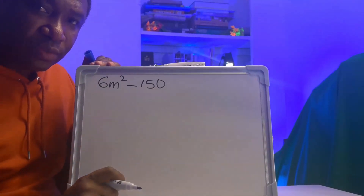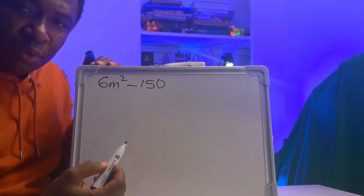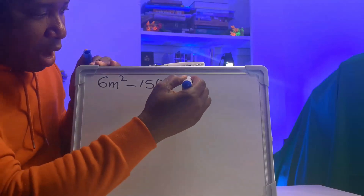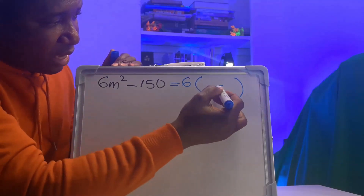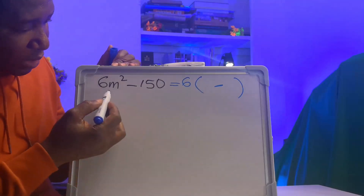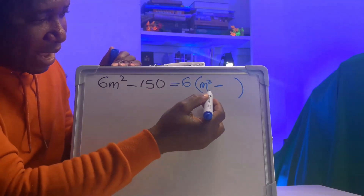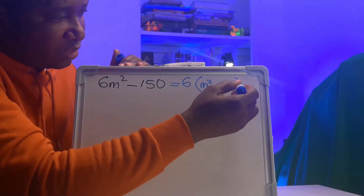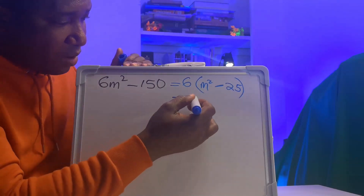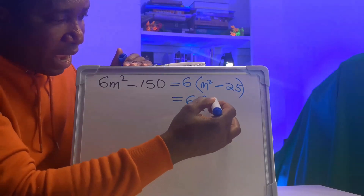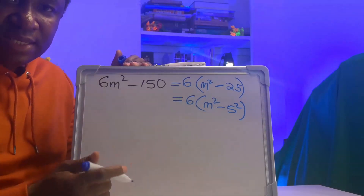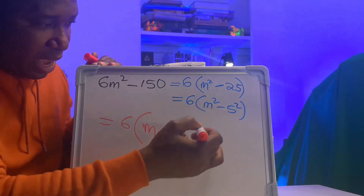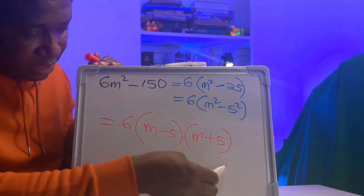Let's evaluate this question. Here we have a minus separating two variables and numbers, and 6 is common on both sides. So I will bring 6 out and open a bracket: 6 multiplied by m squared gives 6m squared, and 6 multiplied by 25 gives 150. Inside the bracket we have m squared minus 25, which is m squared minus 5 squared — difference of two squares. So the answer is 6 times (m minus 5) in brackets times (m plus 5) in brackets.